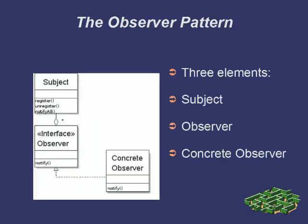The pattern works like so. Initially, concrete observers that implement the observer interface will register themselves with the subject through the register observer method. When the subject changes state in some way that might interest potential observers, it will notify them via the notify observers method. This will call the notify methods of any potential observers.